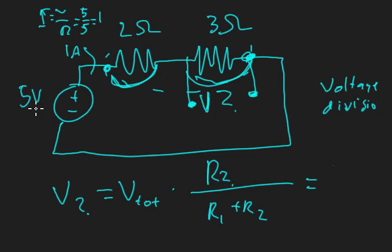In this case, our total voltage is 5, times the resistor we're trying to find the voltage over, which is 3, divided by our total resistance, which is 2 plus 3, so 3 over 5. V₂ is going to be 5 times 3 over 5, so the 5s cancel, and we're left with 3 volts.